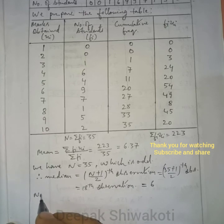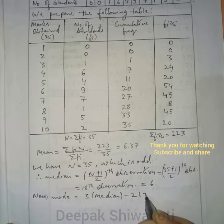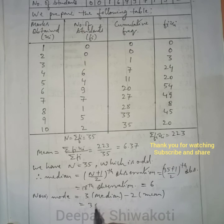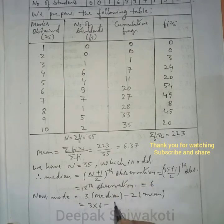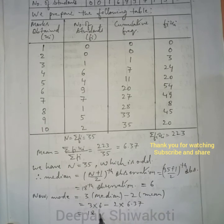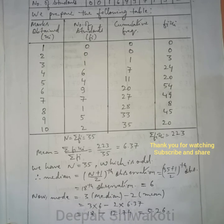Mode is given by the empirical formula: mode = 3 × median − 2 × mean = 3 × 6 − 2 × 6.37 = 18 − 12.74 = 5.26. Thank you very much.